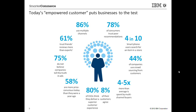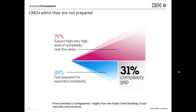These are various complexities that today's marketers face as customers are increasingly empowered. IBM surveyed almost 1,700 chief marketing officers worldwide from various countries and across industries, and the result is a summary of those findings. Almost 79% of chief marketing officers expect a very high level of complexity, and only 48% feel they are prepared for that — a gap of almost 31% between perceived complexity and depth of preparedness.